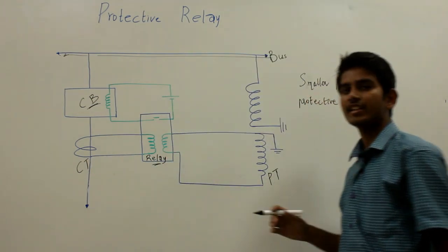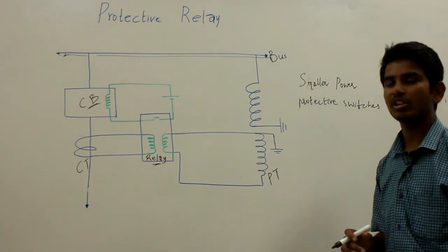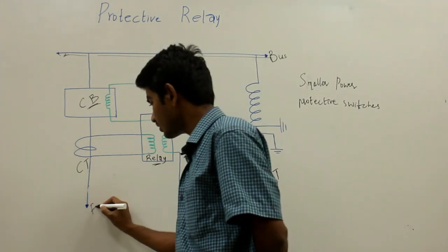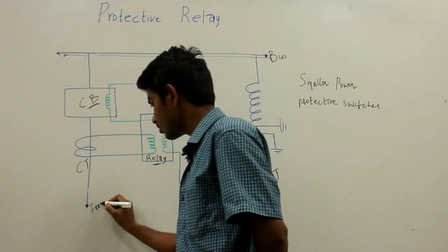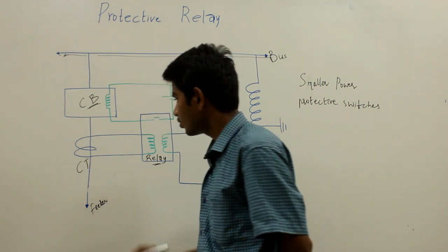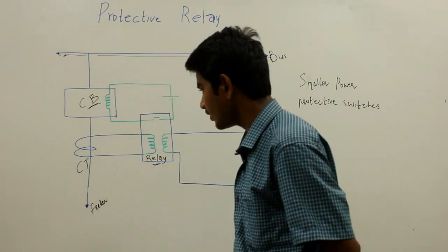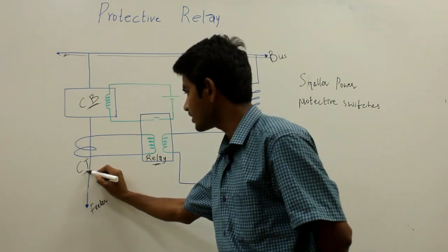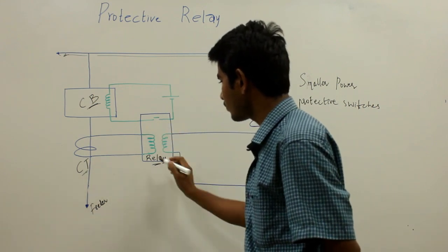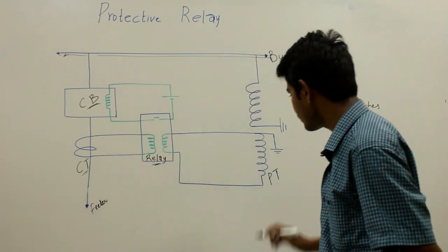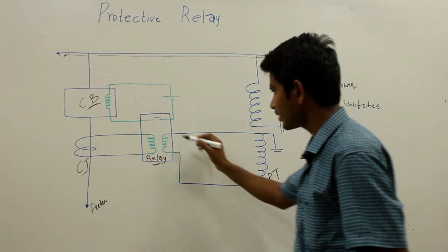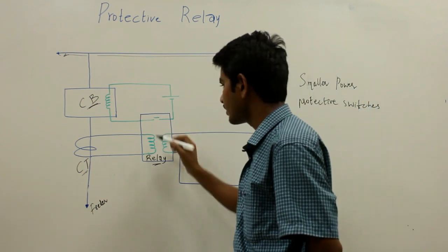Now let us understand the operational principle of this protective relay. Here this is your feeder. The secondary of the current transformer is connected to the current coil of the relay, and the secondary of the potential transformer is connected to the voltage coil of the relay.